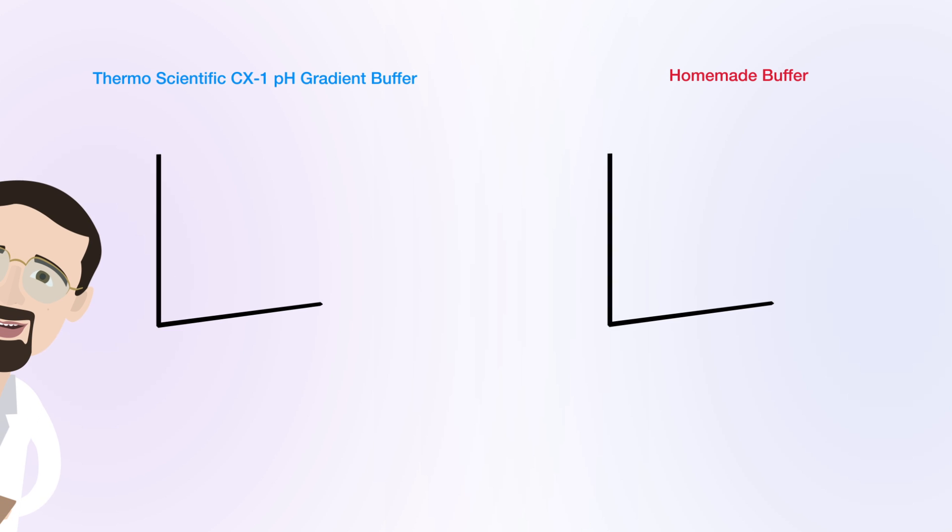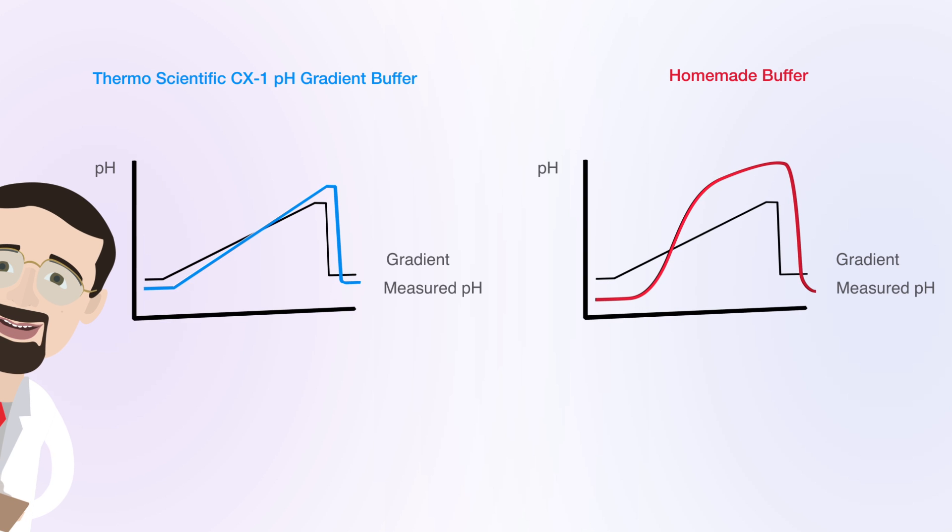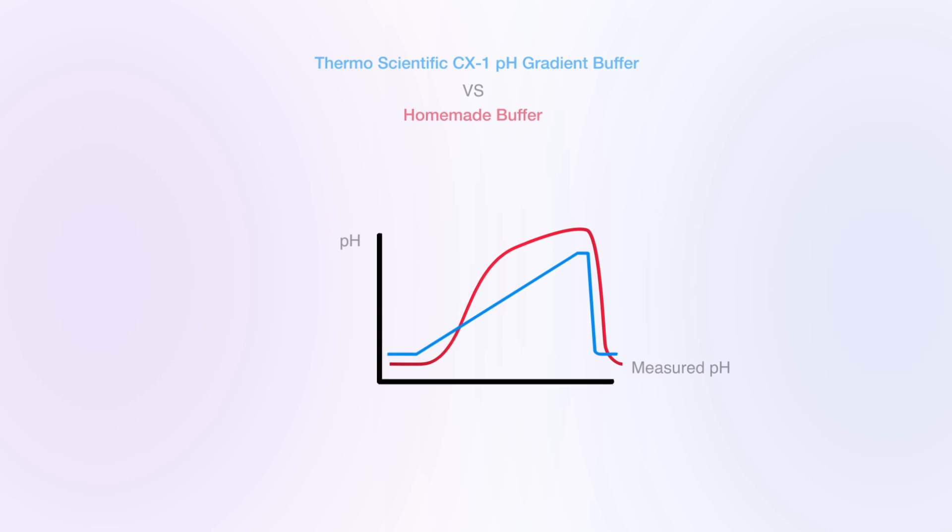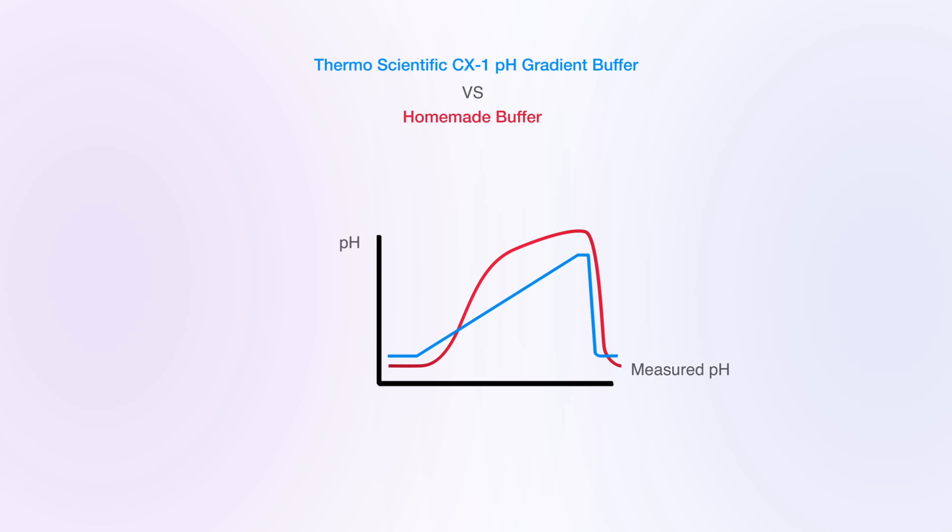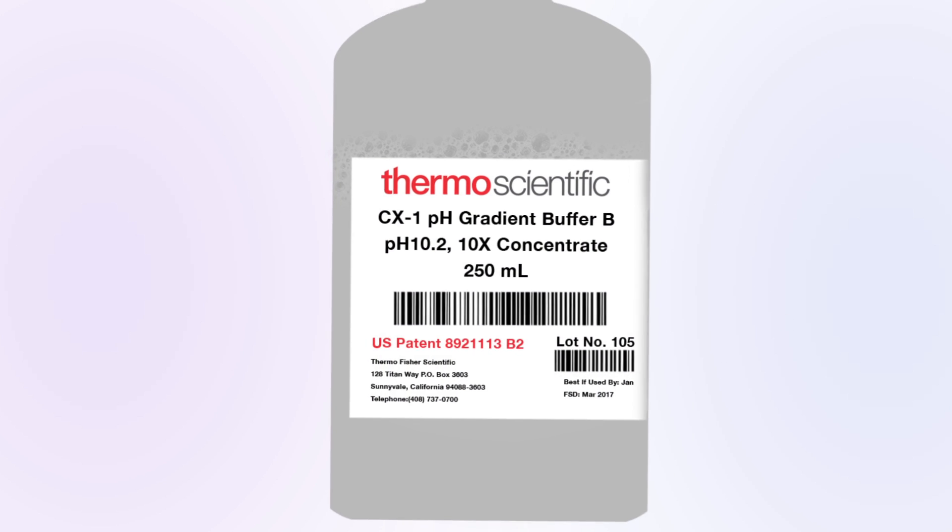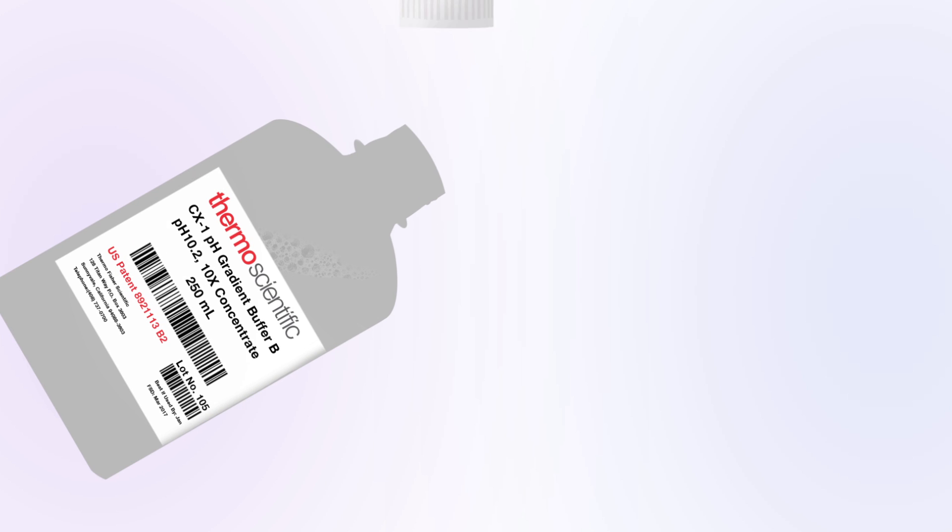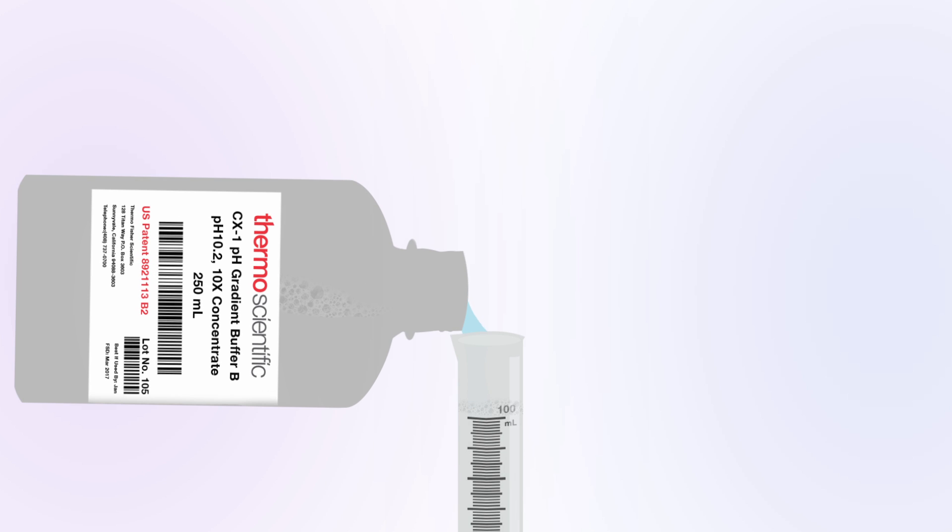The clever scientists at Thermo Fisher Scientific have a solution. Thermo Scientific CX1 pH gradient buffers are easy to make and give linear gradients with reproducible retention times, run after run.